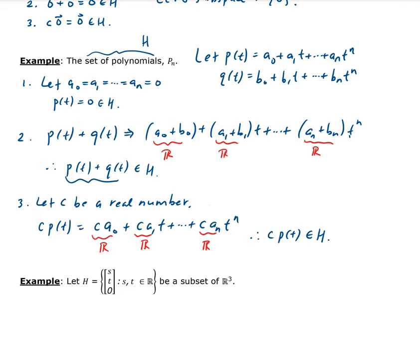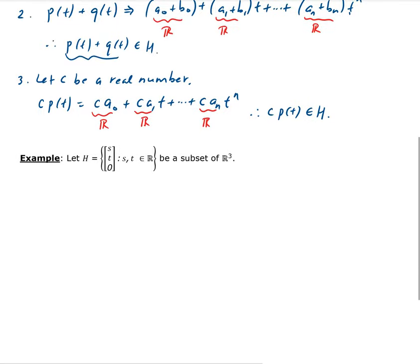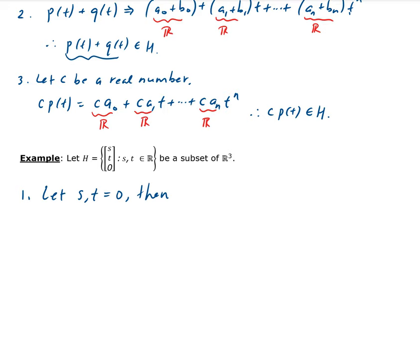And therefore, since it's a subspace, it's also a vector space — the vector space for polynomials. For the third example, we need to show the zero vector is there first. We're going to let S and T be real numbers, and we're going to let S and T equal zero. When we plug these back into H, we get the zero vector. Each component of this vector — zero, zero, zero — is in H, since it has that required form.